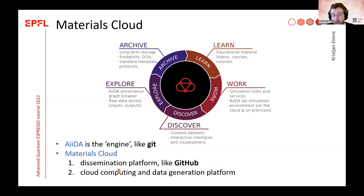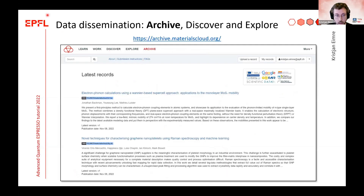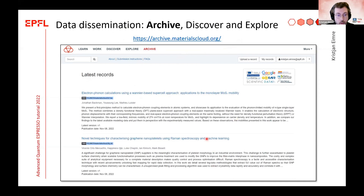Materials Cloud is more than that — it's also a cloud computing and data generation platform, which is the Work section. First, I want to start with the data dissemination part, which pertains to three sections: Archive, Discover, and Explore. The Archive is accessible via its URL and is essentially an open research data repository. All researchers can upload their research data and receive records with a DOI, making it citable and indexed by many search engines.